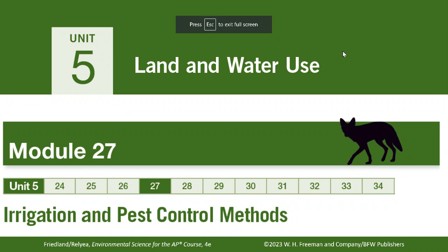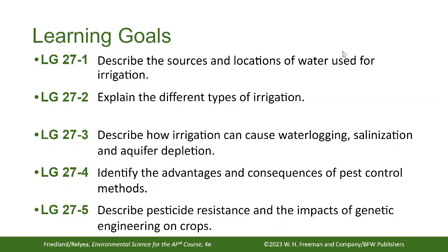Unit 5, Module 27: Irrigation and Pest Control Methods. Our learning goals today are to describe the source and locations of water used for irrigation, explain the different types of irrigation, describe how irrigation can cause waterlogging, channelization, and aquifer depletion, and describe pesticide resistance and the impacts of genetic engineering on crops.